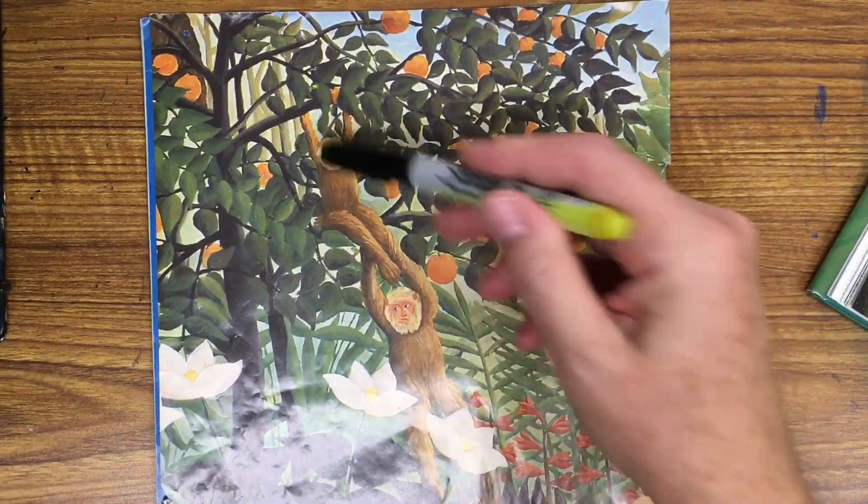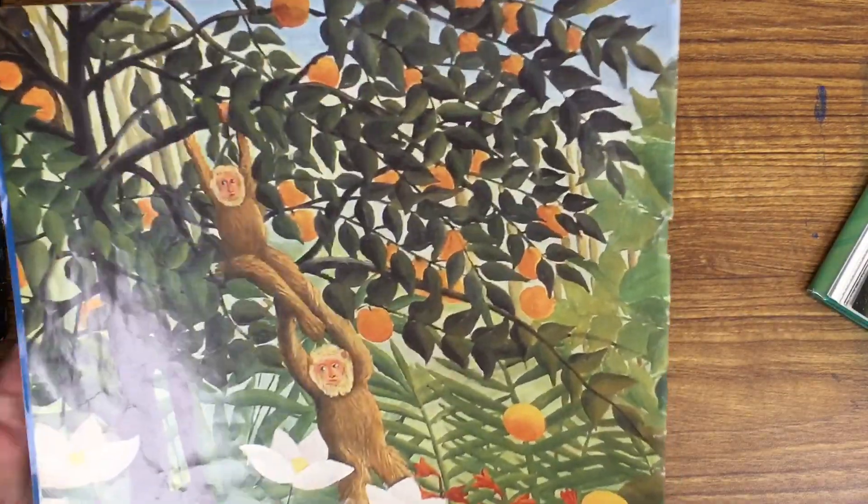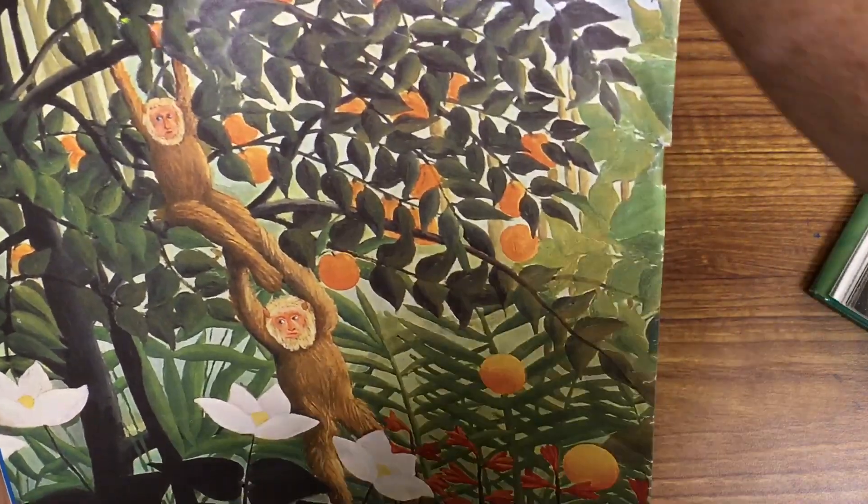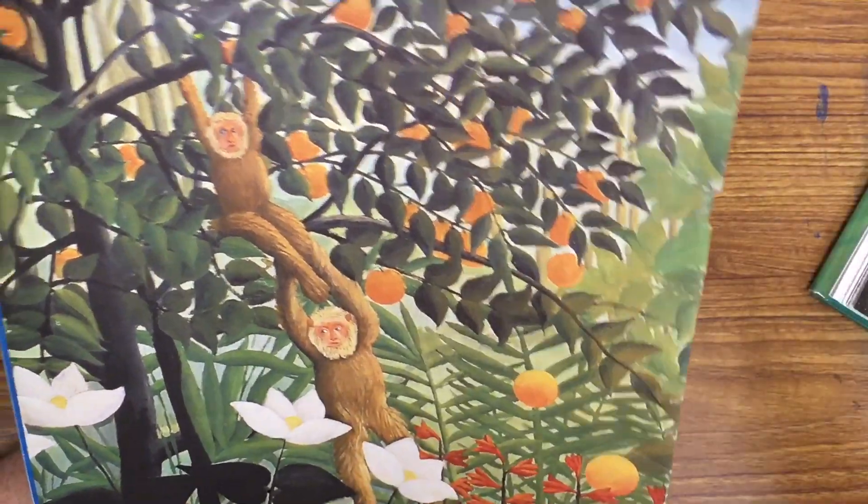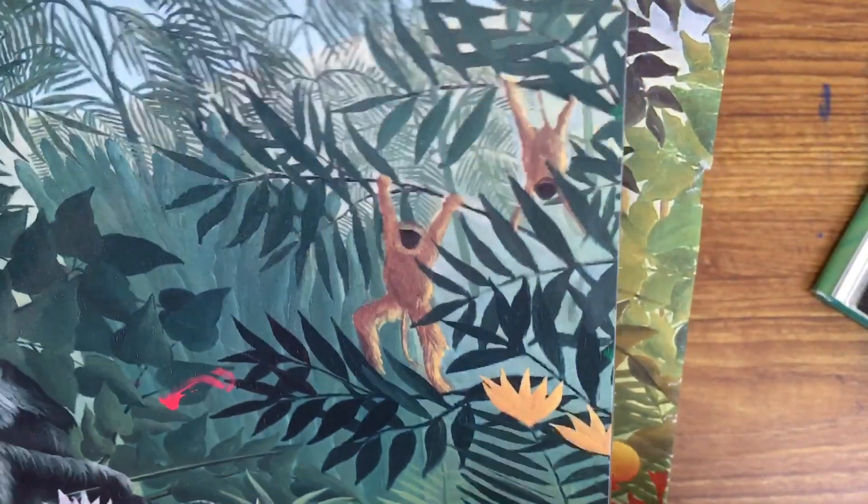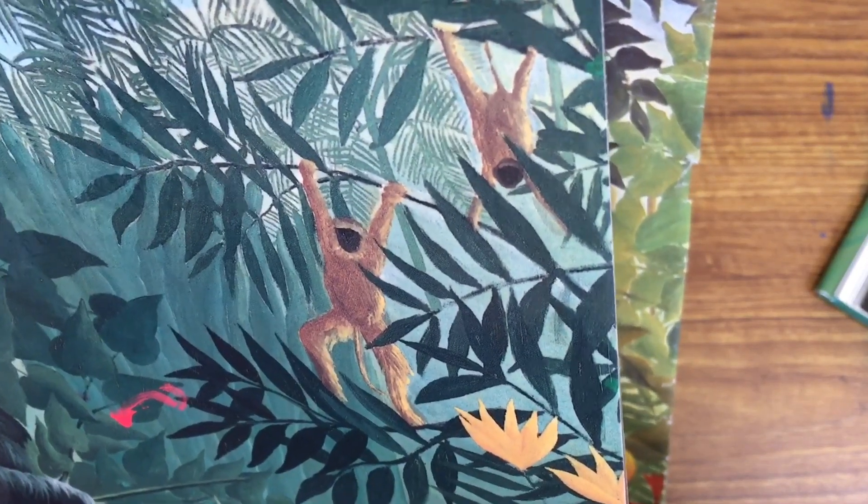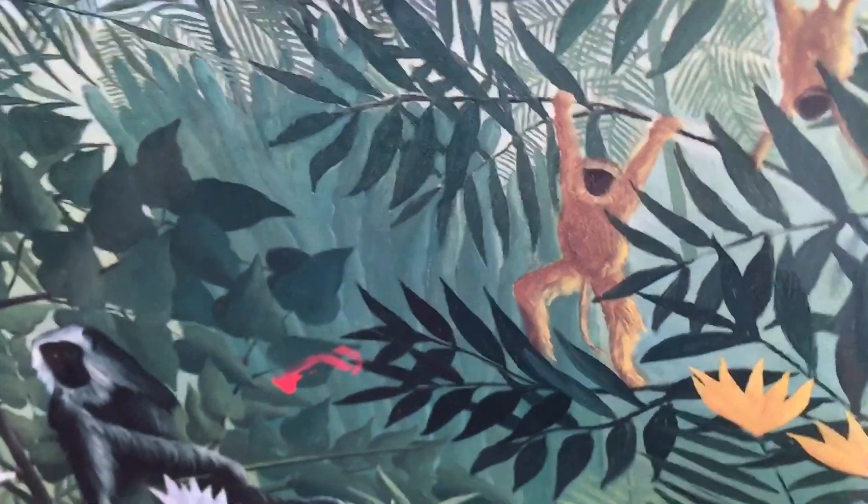For example, he loved to have monkeys actively playing, and sometimes they're throwing oranges at each other. In one painting, here's one where one of them is upside down in the tree.